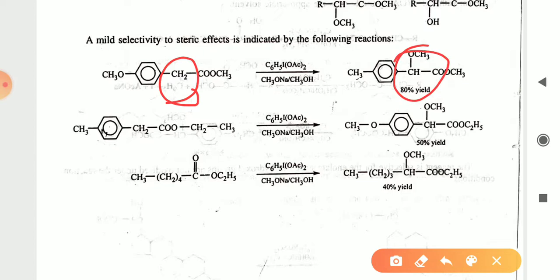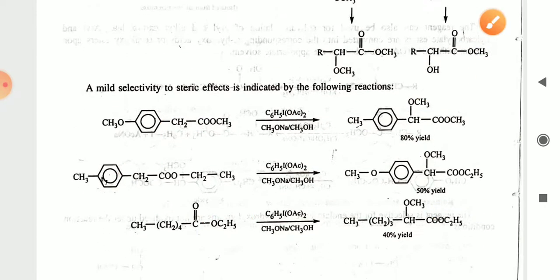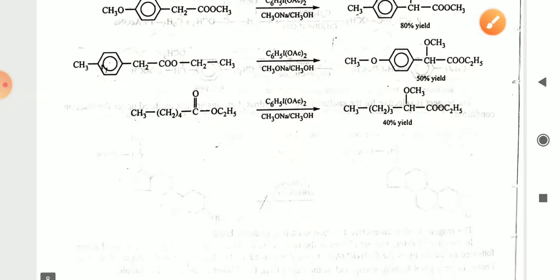In this molecule, the CH₂ group is clear and it will give a 50% yield. In another molecule, the CH group adjacent to the C=O will undergo the reaction process.